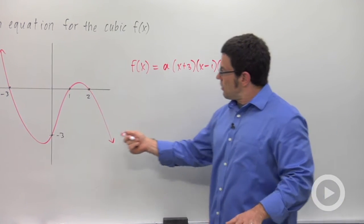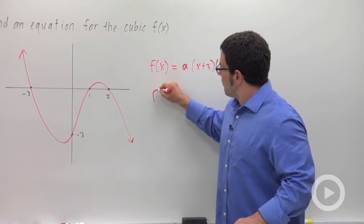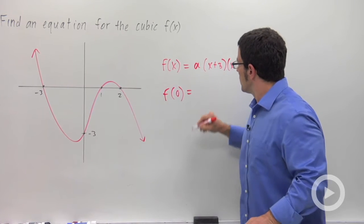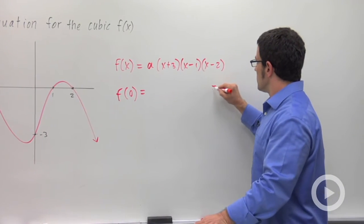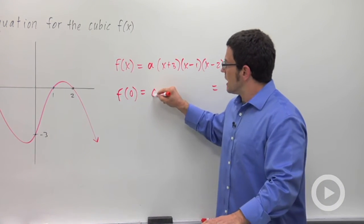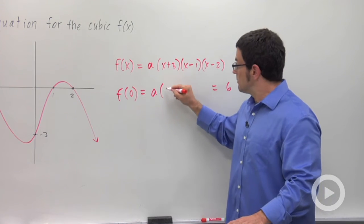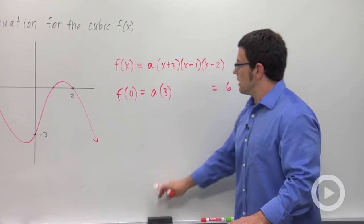So let's plug in the y-intercept. f of 0 equals 6. So we get a times 3. I'm sorry, not 6.